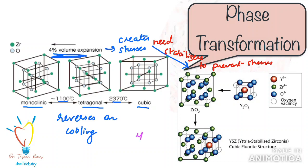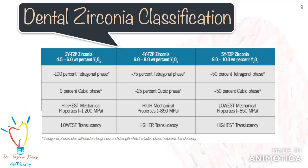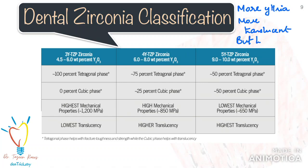In dentistry, yttria tetragonal zirconia polycrystals — or Y-TZP — is generally used. The addition of yttria stabilizes the crystalline structure under conditions of increased temperature and improves the physical properties of zirconia. Depending on the amount of stabilizer added, the properties of zirconia change — affecting strength, fracture toughness, and optical properties such as translucency. Essentially, the more yttria that is added, the more translucent zirconia becomes, but also weaker and less fracture resistant. Current zirconia can be classified into three groups based on yttria content.